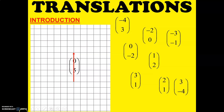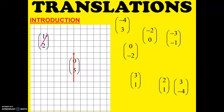Let's try another one. This vector is equal to 1, 2 — 1 step to the right, 2 steps up.